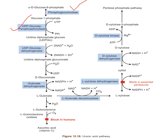UDP glucose is then oxidized to glucuronic acid by the enzyme UDP glucose dehydrogenase, an NAD-dependent enzyme. A non-enzymatic hydrolysis reaction then removes the UDP part from uridine diphosphate glucuronic acid, converting it to D-glucuronic acid. This glucuronate is then reduced to L-gulonate by gulonate dehydrogenase, an NADPH-dependent enzyme. D-glucuronate, with the help of gulonate dehydrogenase, is converted into L-gulonic acid.